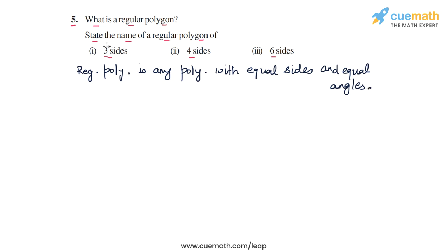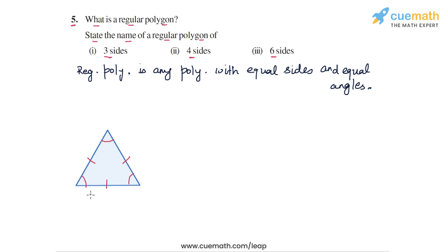Now we are asked to state the name of a regular polygon of three sides, four sides, and six sides. A regular polygon of three sides is a triangle in which all the sides are equal and all the angles are also equal — and because they are equal, each angle will be 60 degrees. So such a polygon is actually an equilateral triangle.